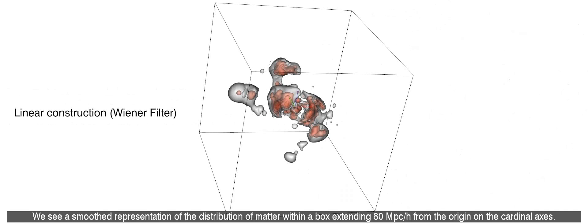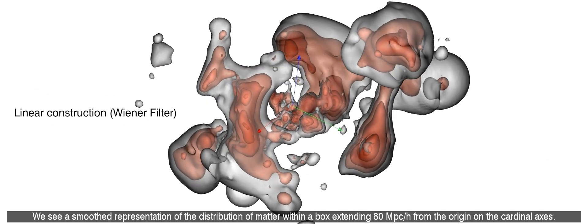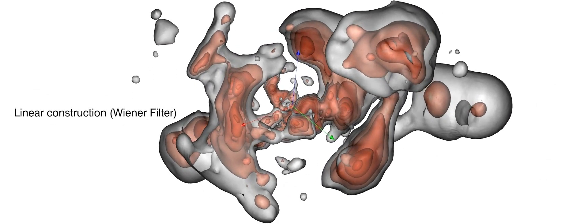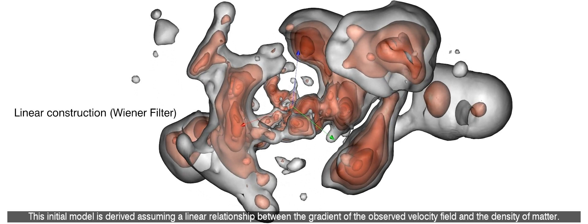We see a smoothed representation of the distribution of matter within a box extending 80 megaparsec over h from the origin on the cardinal axis. This initial model is derived assuming a linear relationship between the gradient of the observed velocity field and the density of matter.